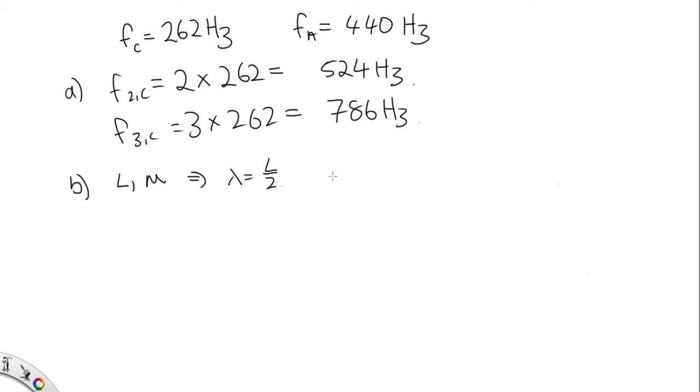And we need to work out how the tensions are related. So we have the equation V equals F lambda, and we also know that the velocity is equal to the square root of the tension over the mass per unit length.